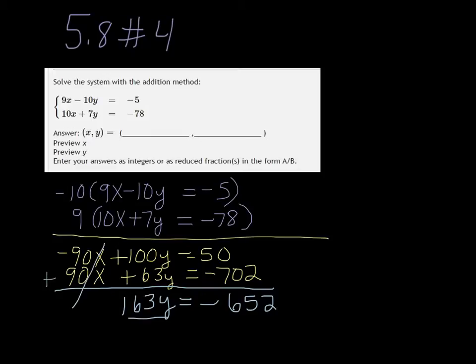And all you need to do to solve for Y is divide both sides by 163. So Y would be negative 652 divided by 163, and that works out to be negative 4.